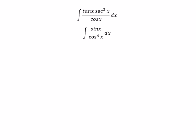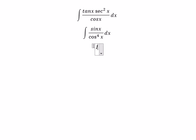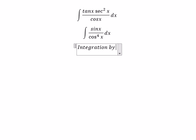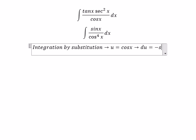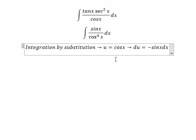And now we can use integration by substitution. So we put u equal to cosine x, du equal to negative sine x dx. Negative we put next to du.